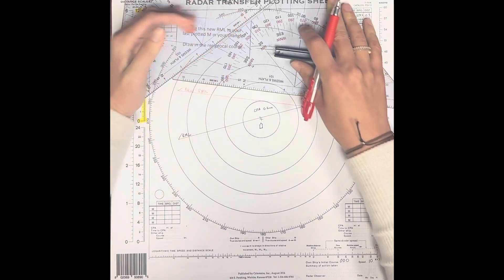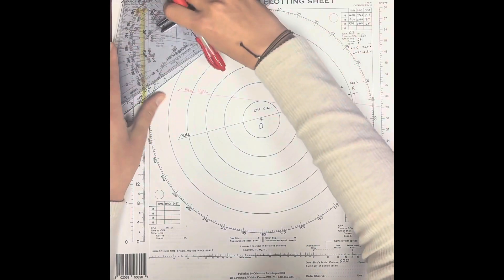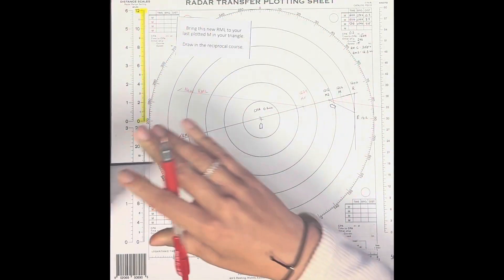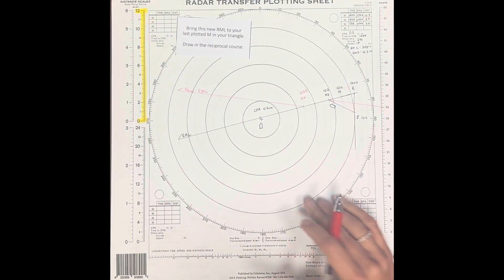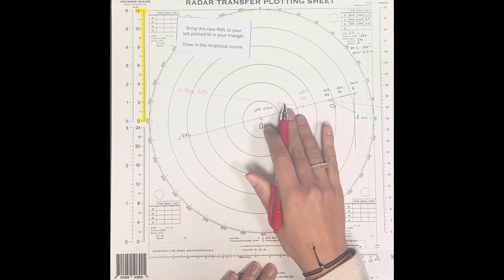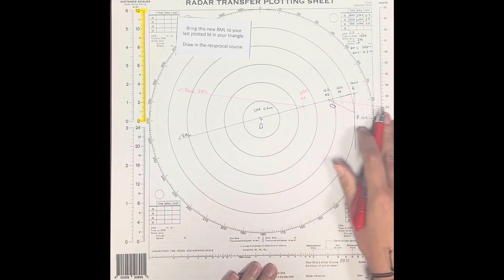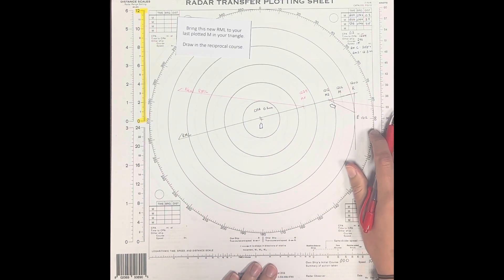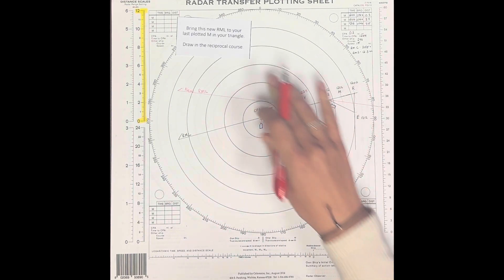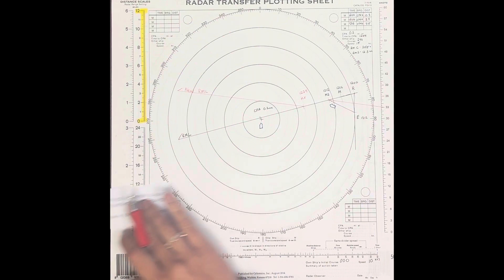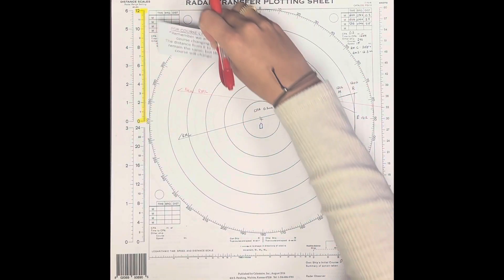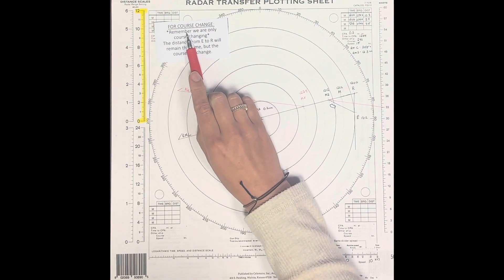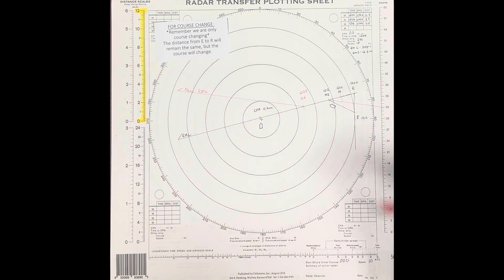We are going to draw the reciprocal course backwards from M — make sure you extend that line pretty decently. Now we have our new relative motion line from their MX and extrapolated backwards from their M. Now it is time to find our course change.